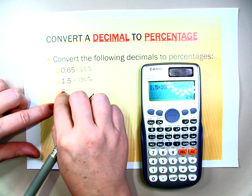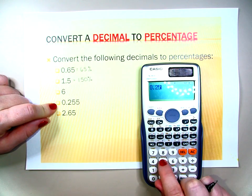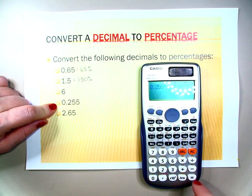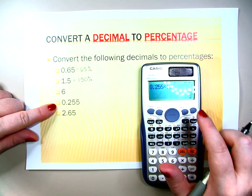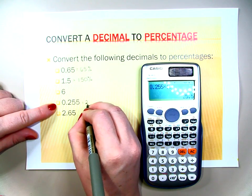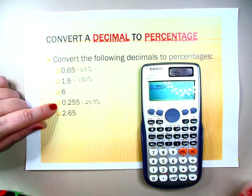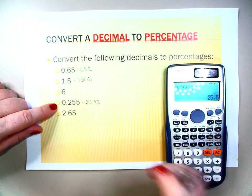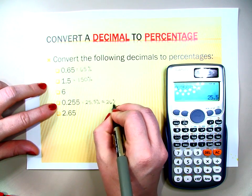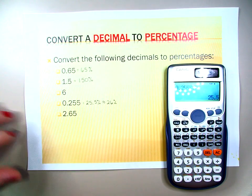We'll leave a couple for you to work on. For 0.255 multiplied by 100, we get a fraction on the calculator. Hit the SD button to make the fraction into a decimal and we get 25.5%. If we had to round it to the nearest percent, the 5 makes the other 5 round up, so it would be 26%.